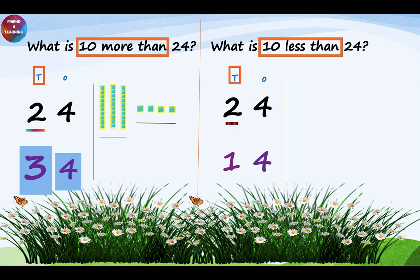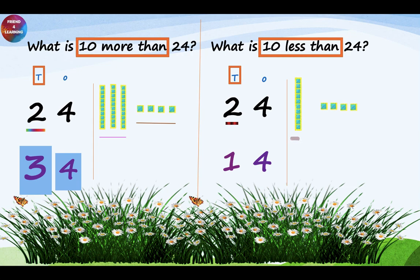Now let's look at the same example using blocks. For 2 tens, I am going to place 2 ten blocks: 1 and 2 — that is 20. And for 4 ones, I am going to place 4 ones blocks: 1, 2, 3, 4. The sum says 10 less than, so I am going to remove 1 ten block. Now I have 1 ten and 4 ones. The 1 stands for 1 ten and 4 stands for 4 ones, so my answer is 14.